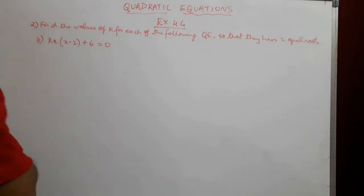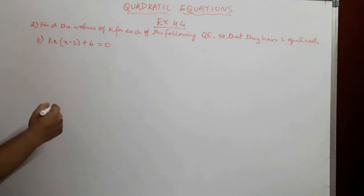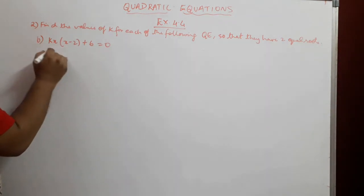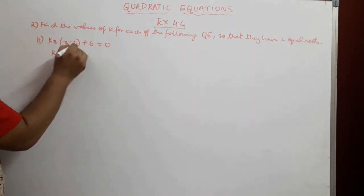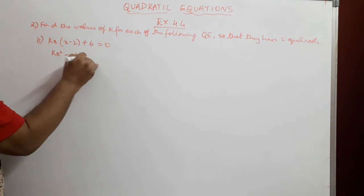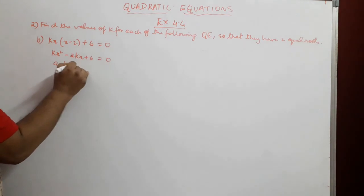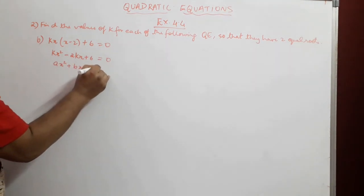Next problem is kx(x - 2) + 6 = 0. Let us first bring this in the quadratic equation form. kx × x gives us kx². kx × (-2) will give -2kx + 6 = 0. Now, this is in the quadratic equation form and we can compare it with the general form, that is ax² + bx + c = 0.